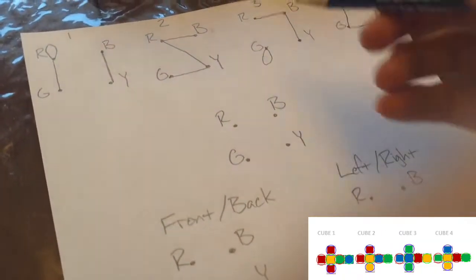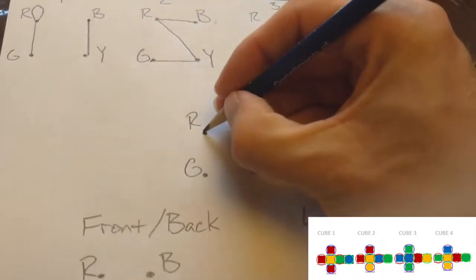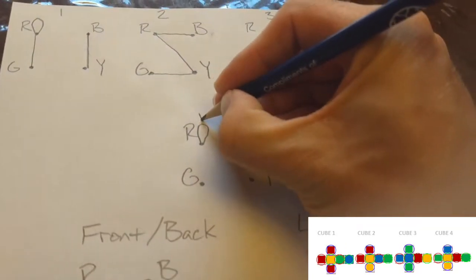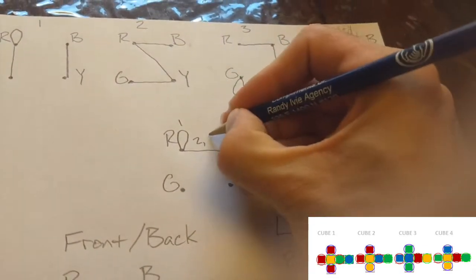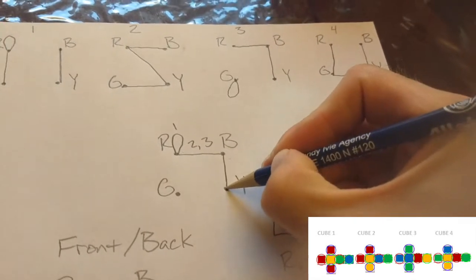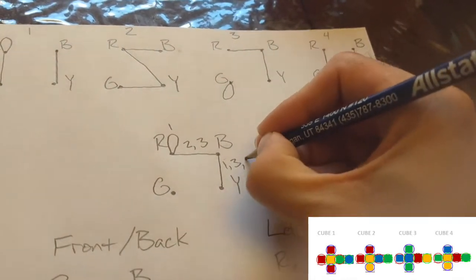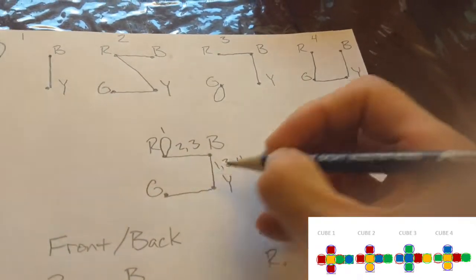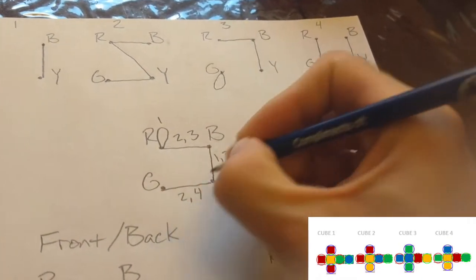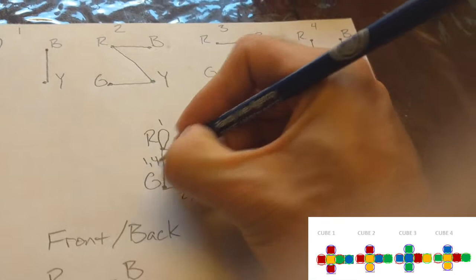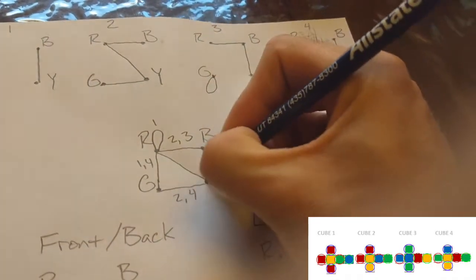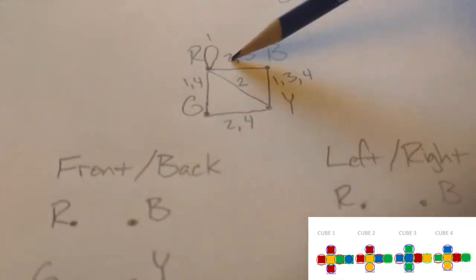The next step of graph theory is to take all four of these graphs and combine them into one. We've got red to red on graph one; red to blue on graphs two and three; blue to yellow on graphs one, three, and four; green to yellow on graphs two and four; red to green on graphs one and four; and red to yellow on box two.